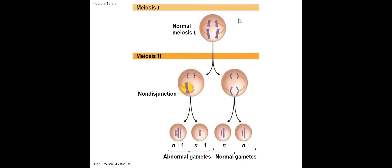If we can go through meiosis I and the homologous chromosomes separate correctly, then we go into meiosis II. Normally, sister chromatids pull apart in anaphase II, but if they get stuck together, we will see one gamete with too many chromosomes, one with not enough, and two normal haploid gametes. So if non-disjunction happens in meiosis I, all gametes are affected. If non-disjunction happens in meiosis II, only half of those gametes will be affected.